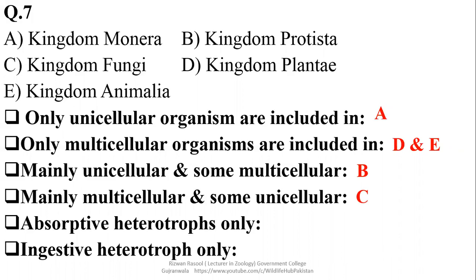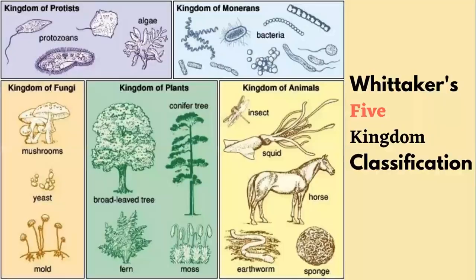Absorptive heterotrophic mode of nutrition is found in Kingdom fungi and some protists, but only absorptive heterotrophs they will be found in Kingdom fungi, so Charlie again. Ingestive heterotrophs only they are animals. Protists they are having a variety of modes of nutrition just like bacteria. And fungi they are mainly absorptive, plants they are mainly photosynthetic, and animals they are ingested. And we know that a major basis for the classification they were cellular organization and nutrition for this five-kingdom system of classification.